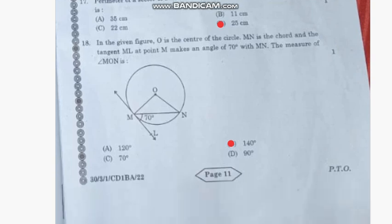Question number 18: In the given figure, O is the center of the circle, MN is a chord, and the tangent ML at point M makes an angle of 70 degrees with MN. The measure of angle MON is—the correct answer is option B, 140 degrees.